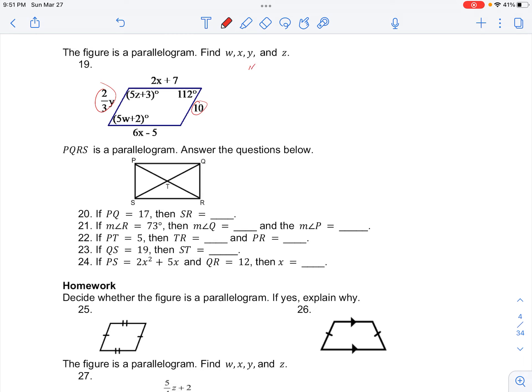So we can set 10 equal to 2 thirds y, multiplying by 3, dividing by 2, we'll get 3 times 10 over 2 equals y, so we have 30 over 2, which gives us y of 15. And now we can do the same for the opposite pair of sides.